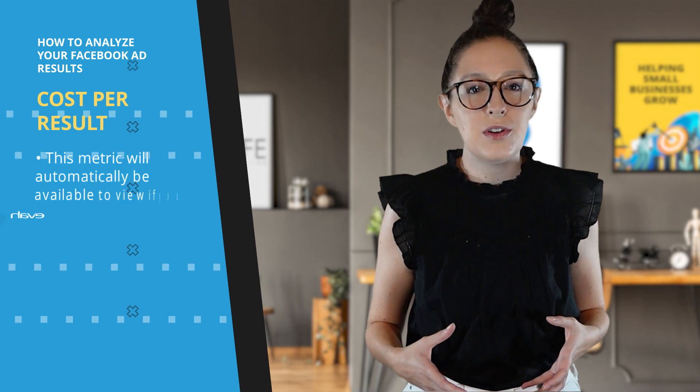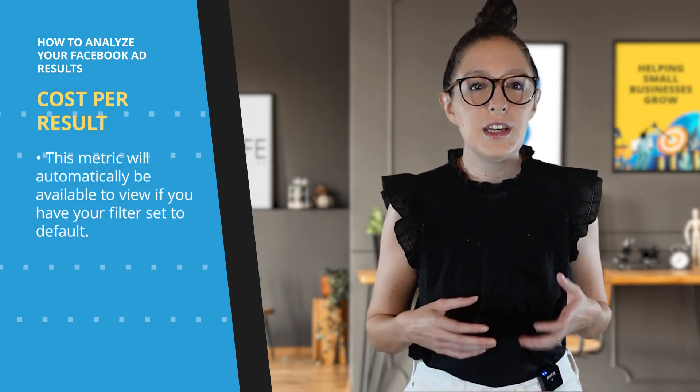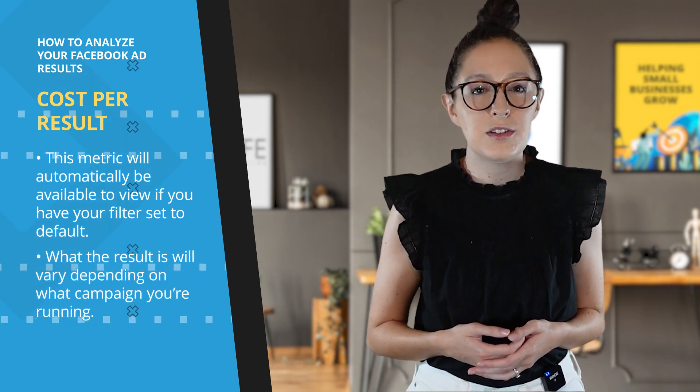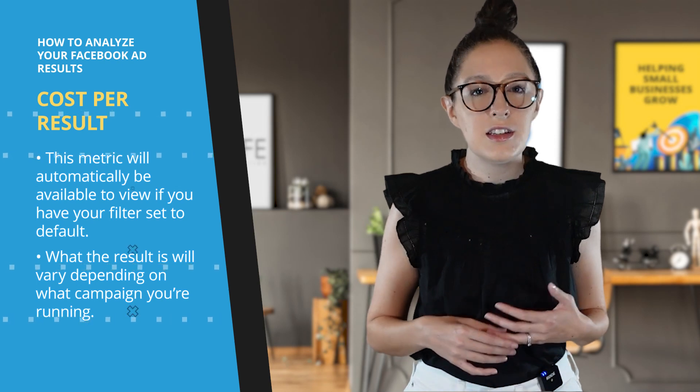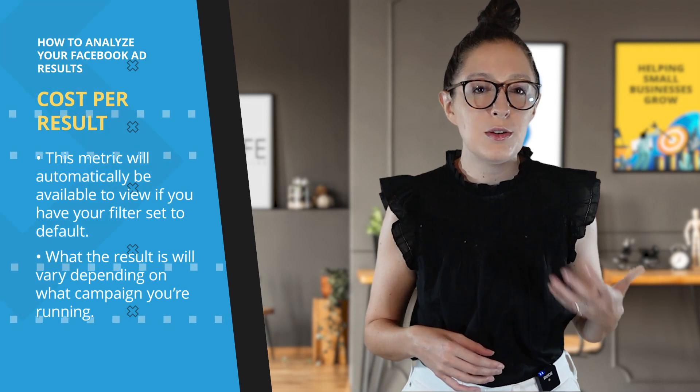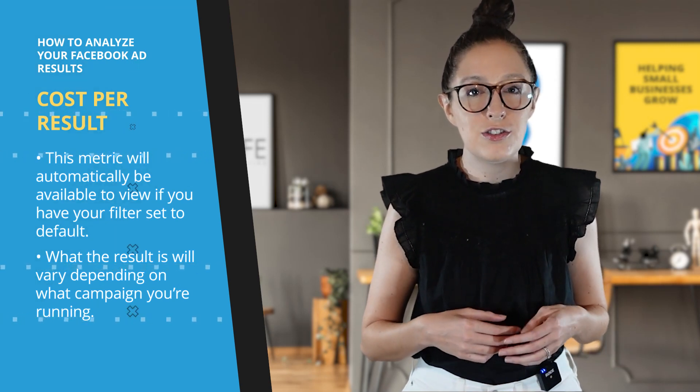Starting with cost per result — this metric will automatically be available to view if you have your filter set to default. What the result is will vary depending on what campaign you're running. An engagement campaign gives you cost per engagement; a traffic campaign gives cost per link click. A conversion campaign will usually be per purchase, but a custom conversion can track to just about anything. For example, cost per result for a custom conversion can be cost per thank-you page visits — useful for tracking how many people fill out a lead form and land on the thank-you page.